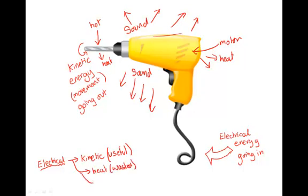So from our diagram underneath, electrical gets transformed to kinetic, which is what we need, is useful. It also gets transformed to heat, which is wasted, and sound, which is wasted.